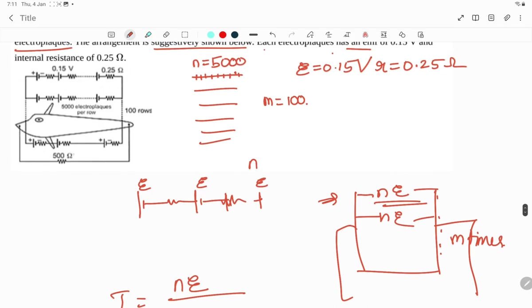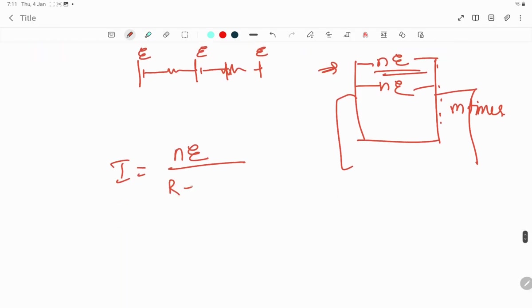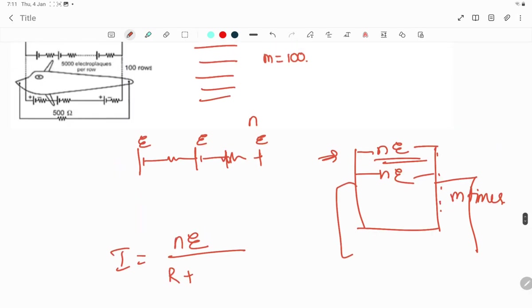In the denominator we have the external resistance capital R and the resistance of the entire combination. In the combination we have r cells connected in series, so n times, giving n times r.